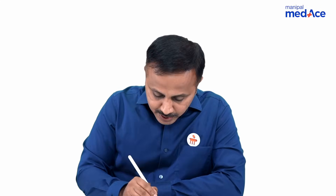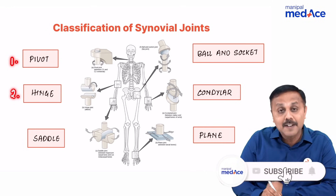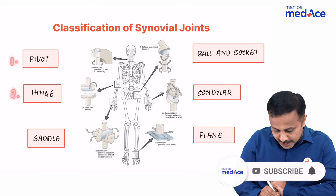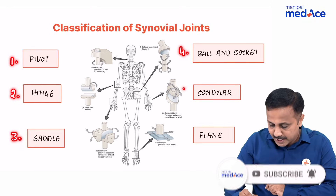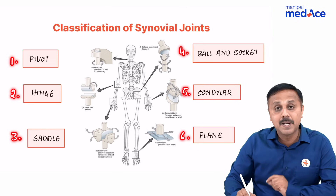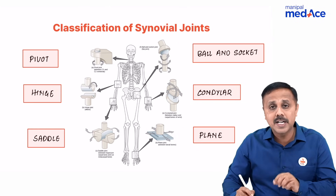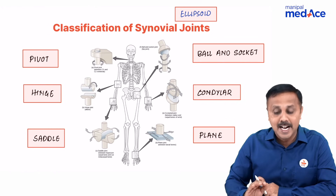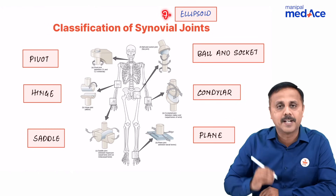The types of synovial joints include the pivot joint, the hinge joint, then saddle, then we have ball-and-socket, then we have condylar, and then we have the plain synovial joint. One joint that seems to be missing here is our ellipsoid joint.